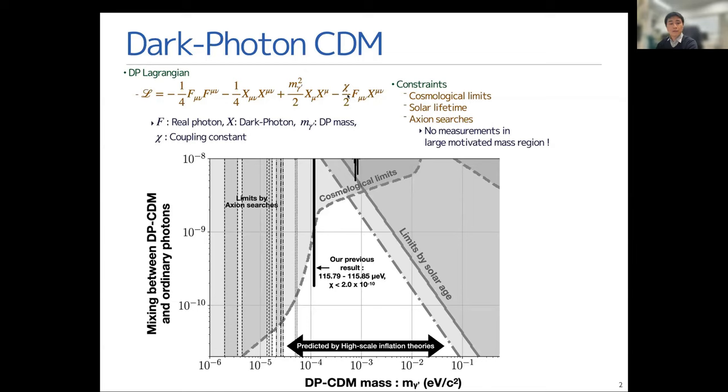If the dark photon interacts with the real photon field very weakly through this parameter chi, we can show the current status of the measurement or the search, the measurement of this parameter chi, as a function of the dark photon mass.